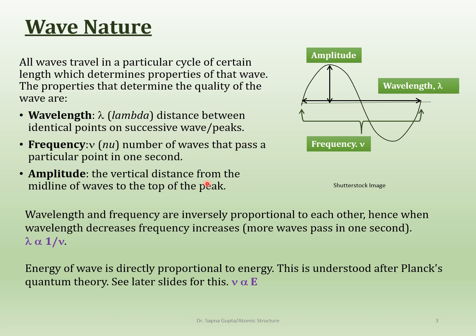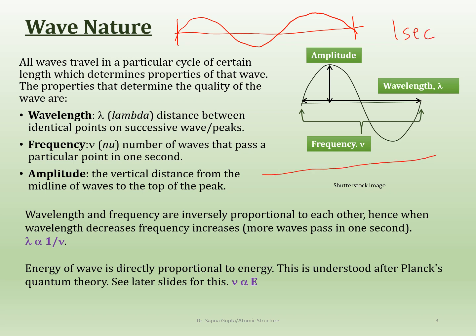The larger the wavelength, the smaller the frequency. If you have a large wavelength, in one second you will have fewer of those cycles — let's say this was one second. If you had a smaller wavelength, still in one second, you can see that you pass a lot more of those wavelengths. So this is an inverse relationship: the larger the wavelength, the smaller the frequency.